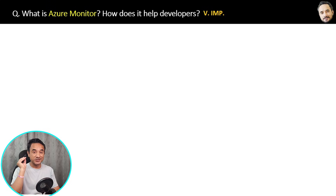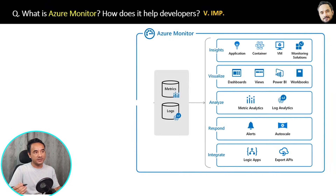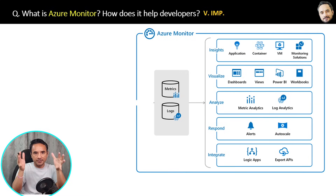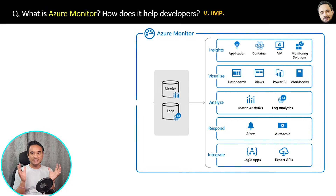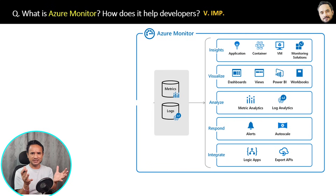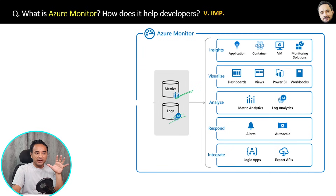What is Azure Monitor and how does it help developers? Basically, when you deploy your application to the production environment and users start using it, Azure Monitor lets you keep an eye on that production application. For example, are users facing any errors, latency, or slowdowns? Which features are users using the most? To monitor all these things in production, you use Azure Monitor — primarily monitoring two things: metrics and logs.